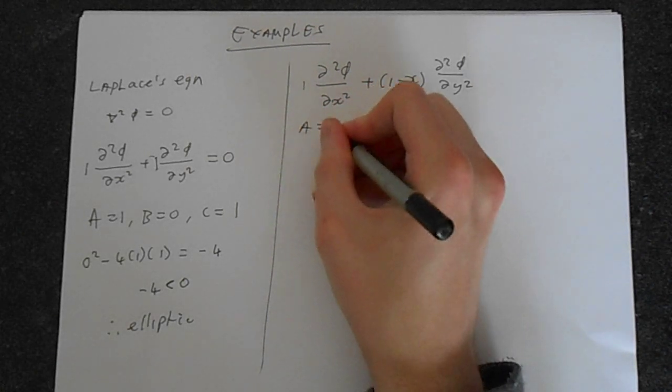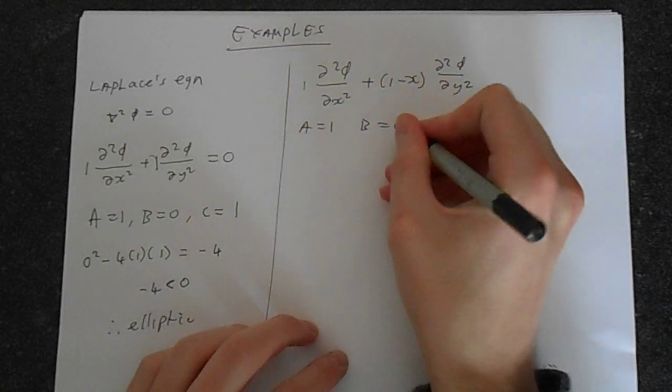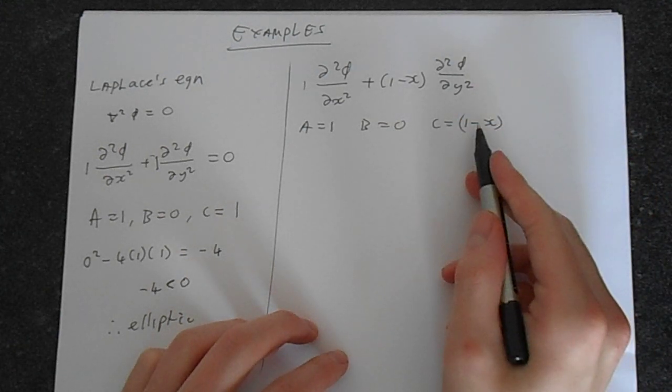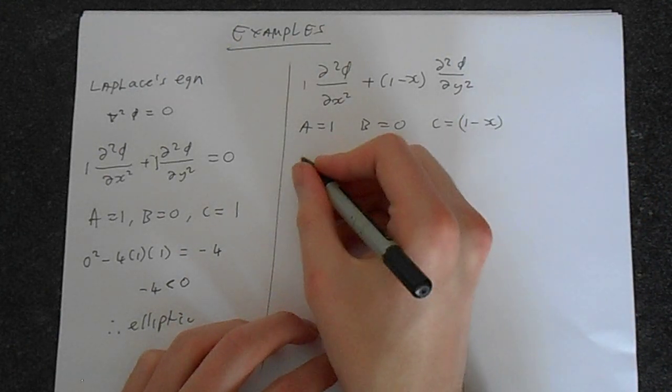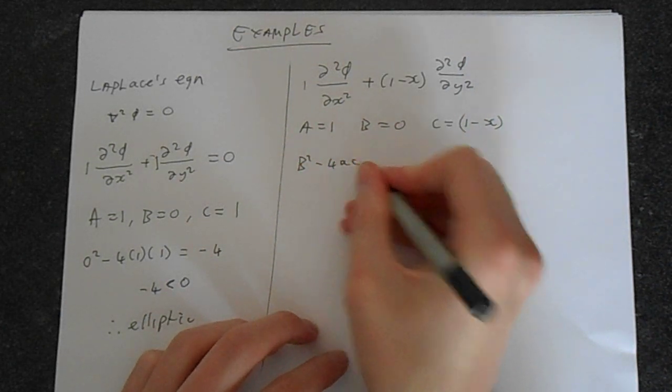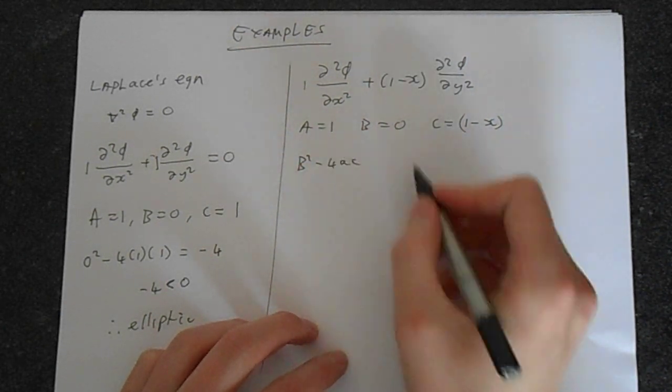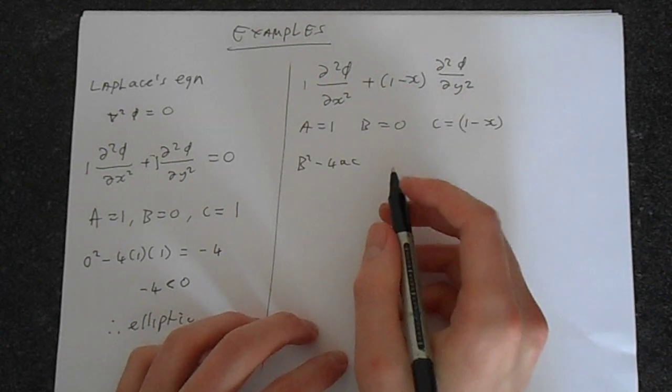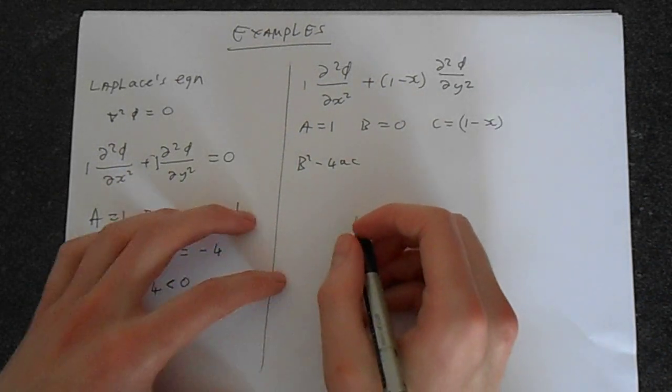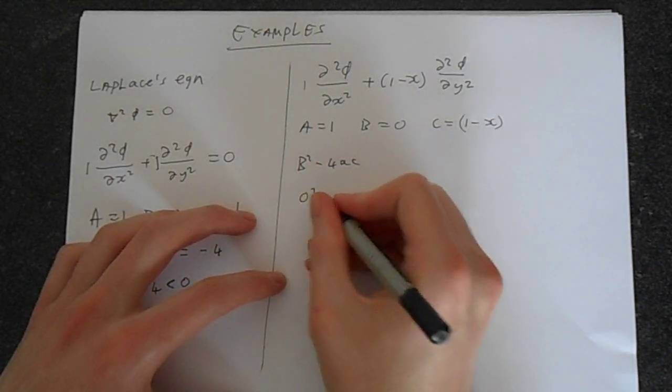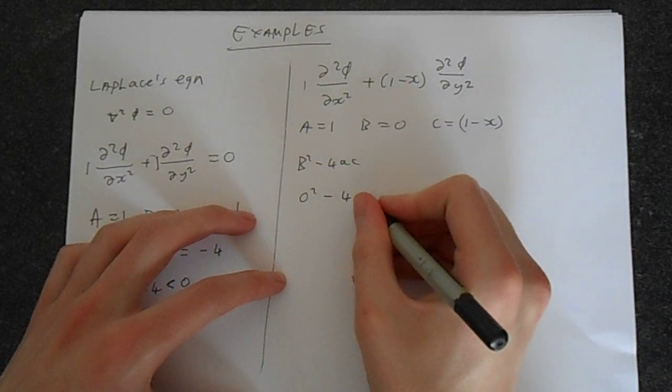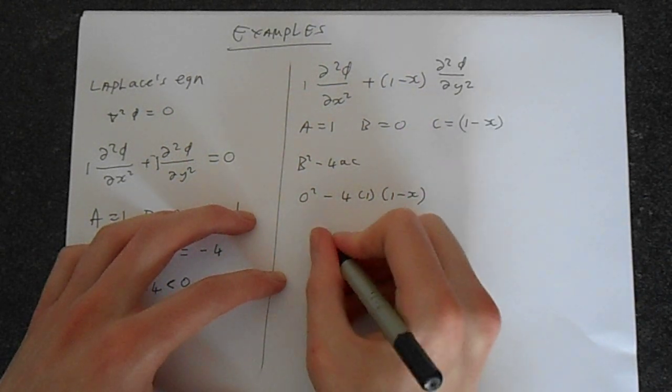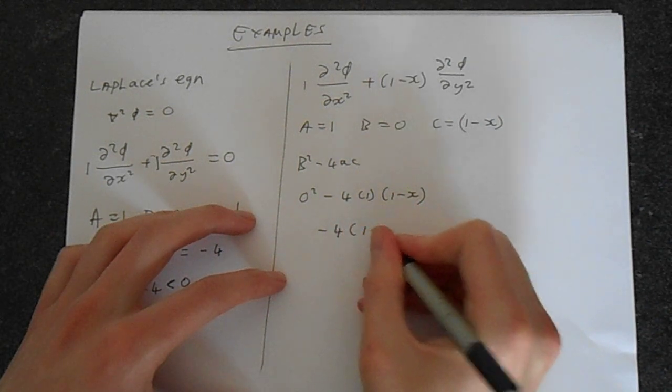So we've got a equals 1, b equals 0, c equals 1 minus x. Now the interesting thing is, the b squared minus 4ac that we've got, when we substitute this in, the classification of this PDE is going to be dependent on the value of x. So we've got 0 squared minus 4 times 1 times 1 minus x. So that is, of course, minus 4 times 1 minus x.